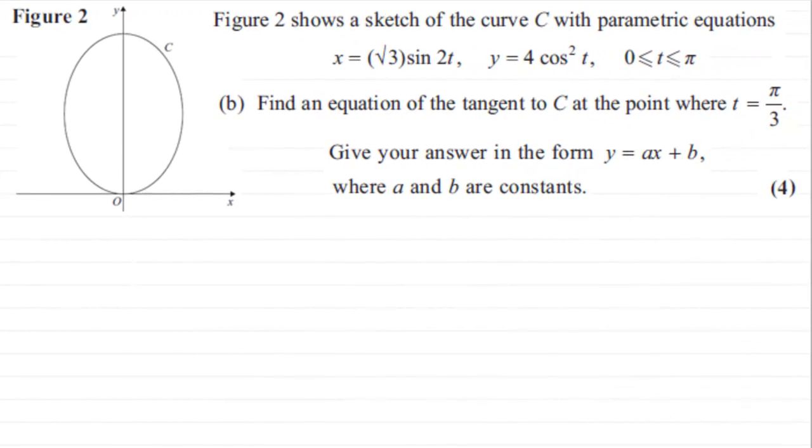In this part of the question, we need to find an equation of the tangent to the curve C at the point where t equals π/3. We've got to give our answer in the form y = ax + b, where a and b are constants.